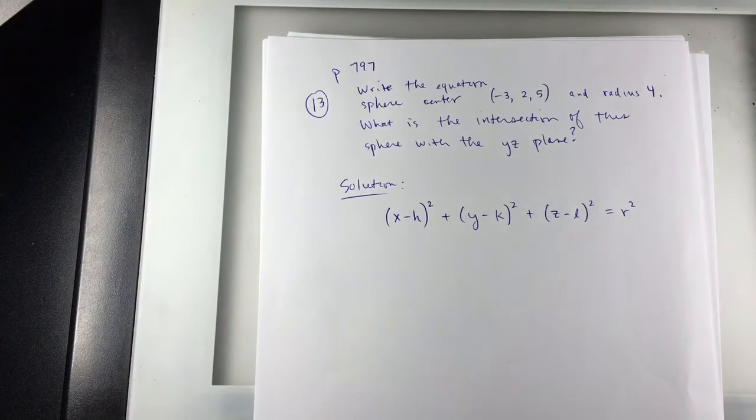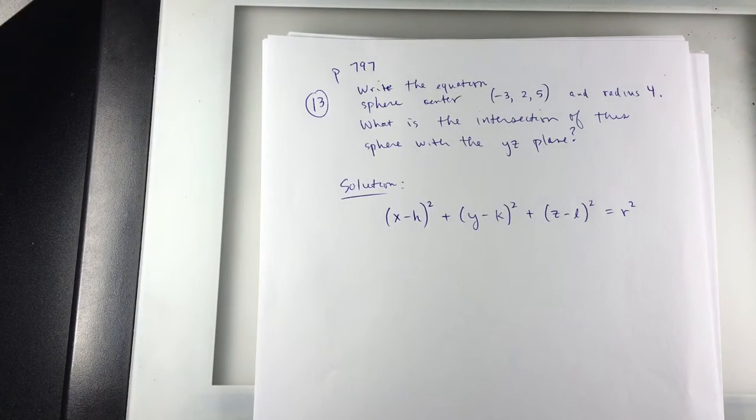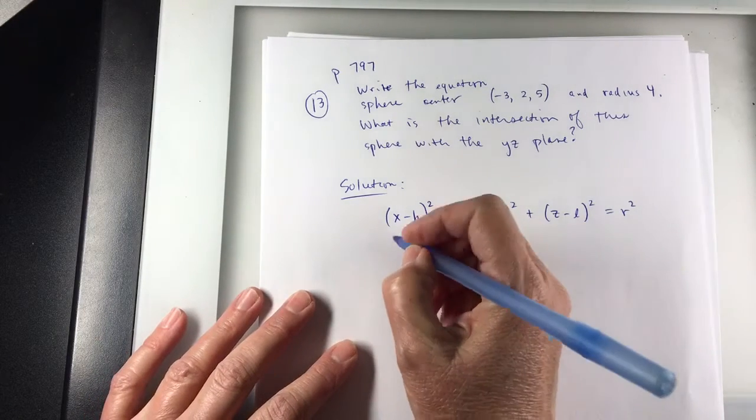Where the point (h, k, l) is the center of the sphere and r is the radius.